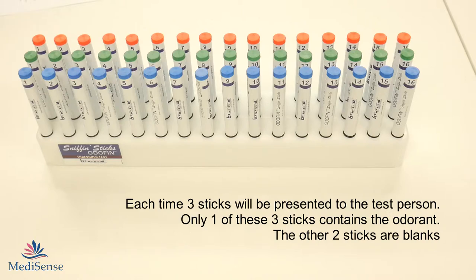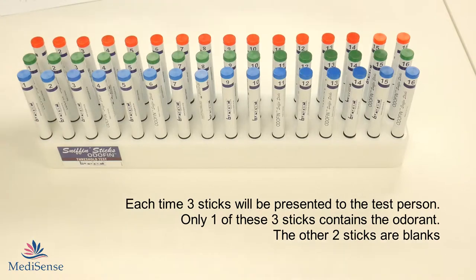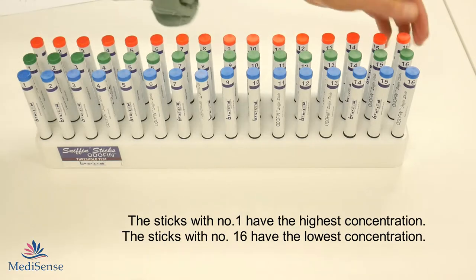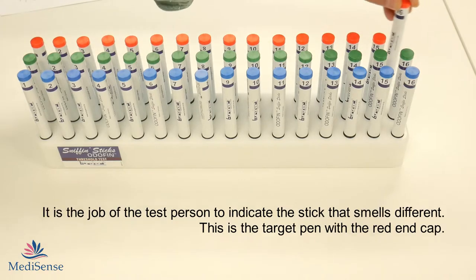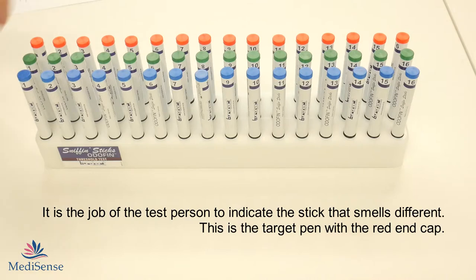With the threshold test, the dilution or concentration works from the lowest concentration to the highest concentration, with 16 being the lowest concentration and the sticks, the triplets with 1 being the highest concentration.